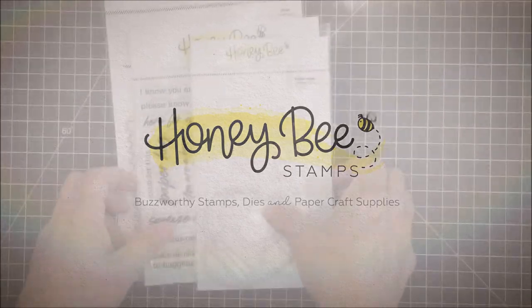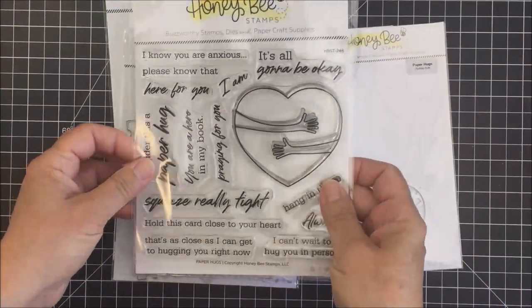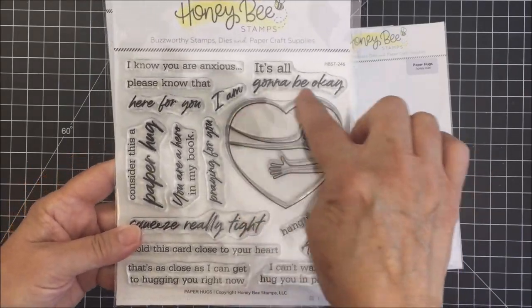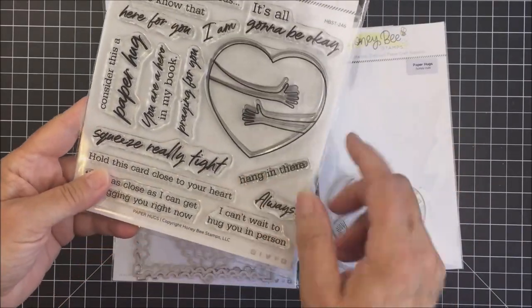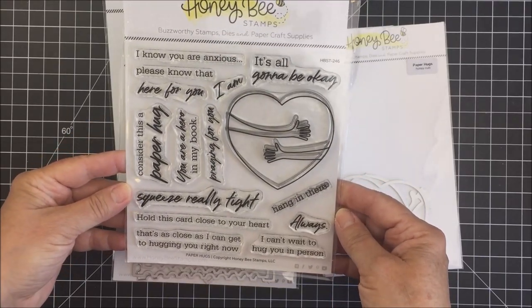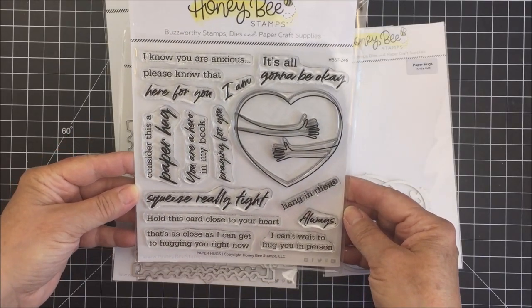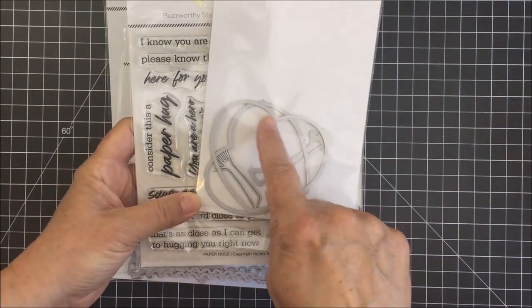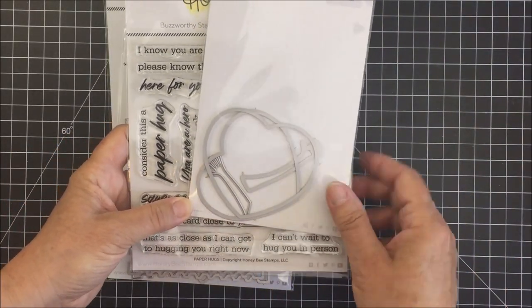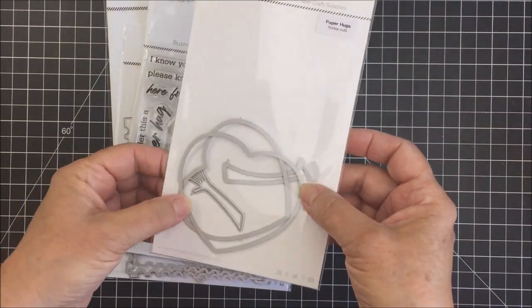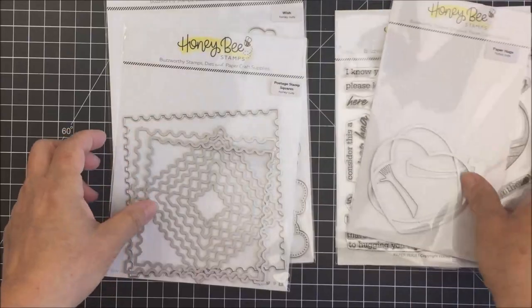Hey everyone, it's Mari. I have another project today for Honeybee Stamps. I'm going to be using this Paper Hugs stamp set. I absolutely love this, especially a great stamp set for this time that we're in. I really love the image of the heart with the hug. I'm also going to be using the companion Honey Cuts and I'm going to create a shaker element with the hearts that are part of that honey cut set.